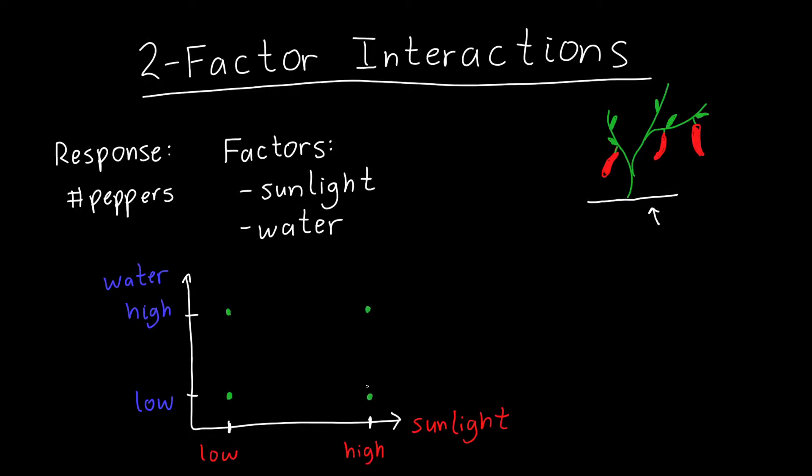And so let's say that I do that experiment, and I end up with these results. So for this condition up here, my plant manages to grow two peppers. In this condition, it manages to grow ten. Over here, where we've got both low water and low sunlight, we manage to grow, let's say, eight peppers. And here, with high sunlight and low water, we manage to only grow three.